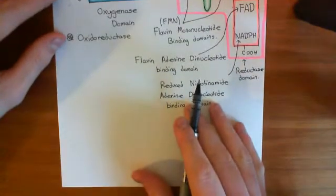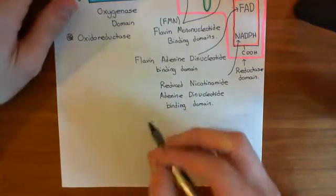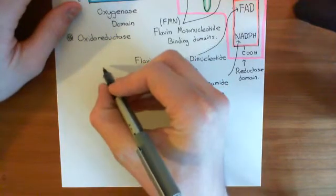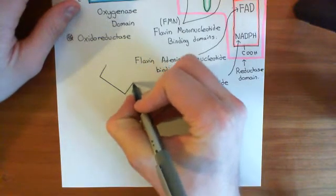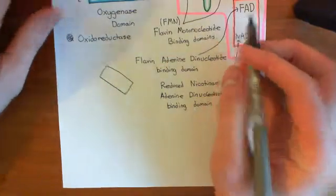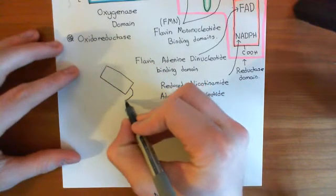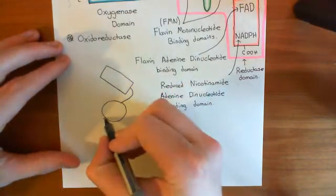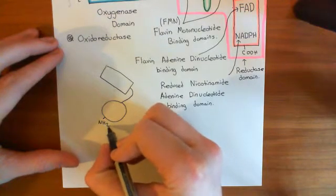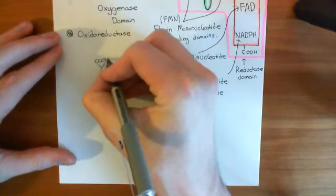Now let's discuss the structure of the nitric oxide synthase dimer and then we'll see how this relates to the function of the enzyme. We'll continue representing the nitric oxide synthase enzyme as rectangles. This represents the reductase domain of one of these nitric oxide synthase proteins, and then it's going to have this oxygenase domain, which we'll represent as a circle. The amino terminus will be over here, and the carboxyl terminus of the polypeptide will be over there.